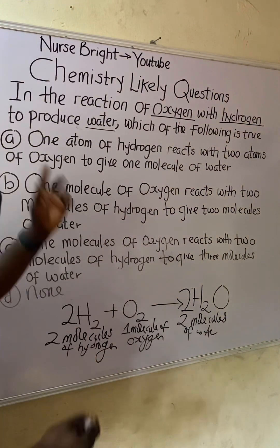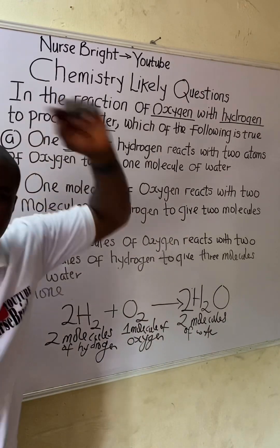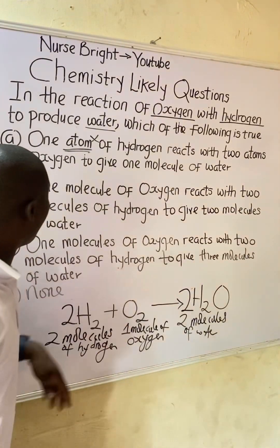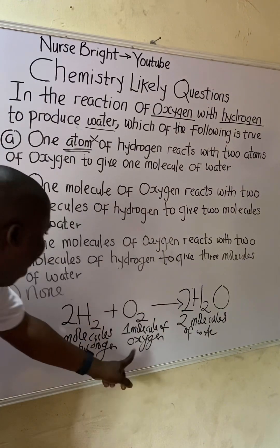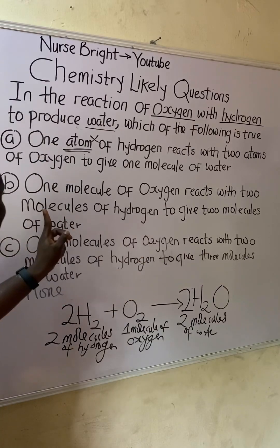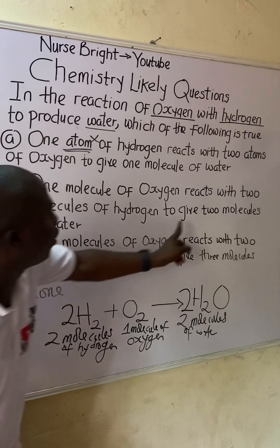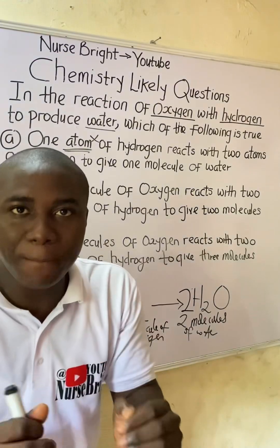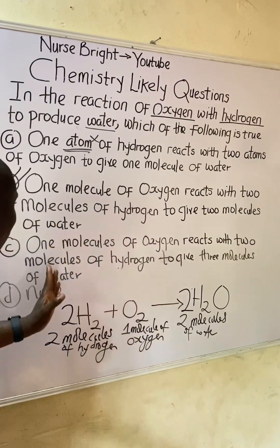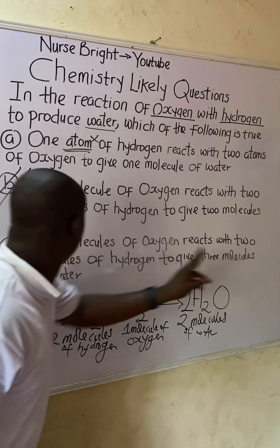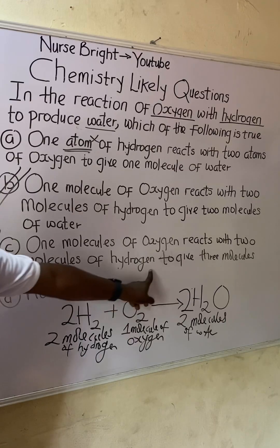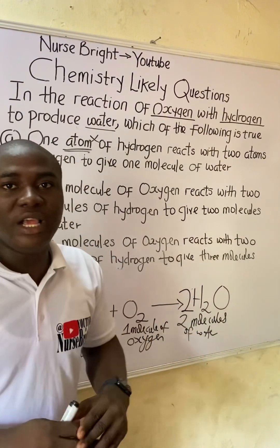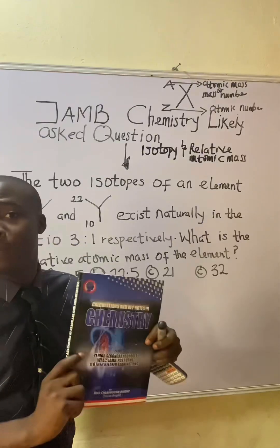Looking at the options: option A mentions atoms — since no atoms appear in this reaction (non-metals react in molecular form), option A is wrong. Option B says one molecule of oxygen reacts with two molecules of hydrogen to give two molecules of water — this matches exactly. Option C says the same reactants give three molecules of water, which is incorrect; it is two. Option D says none of the above. Therefore, the correct answer is option B.